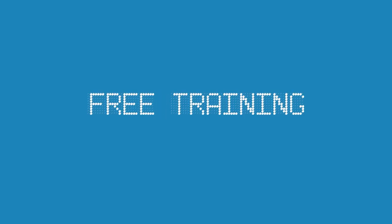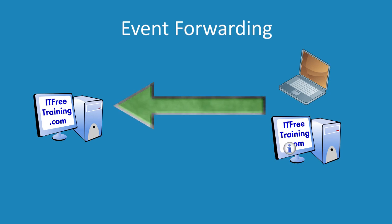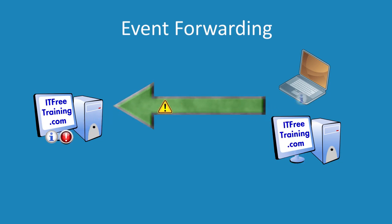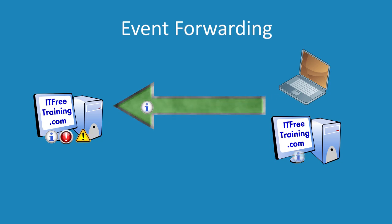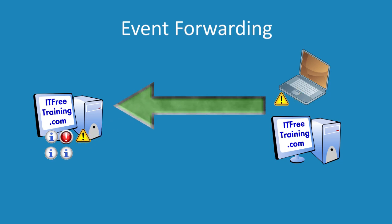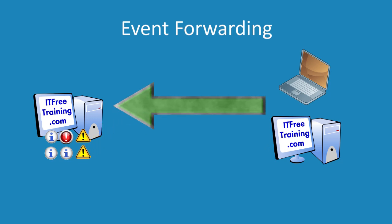Welcome back to another free Windows 7 video. In this video I will look at event forwarding. This process allows one or more computers to send events from their local event logs to another computer. Without event forwarding, the events from each computer will only be available locally on the computers on which they were generated. When you start managing a lot of computers, especially servers, you may want to have all the events from many different computers available in one place. This is essentially what event forwarding does.